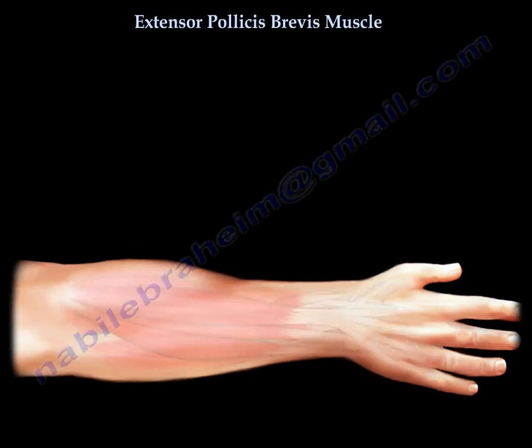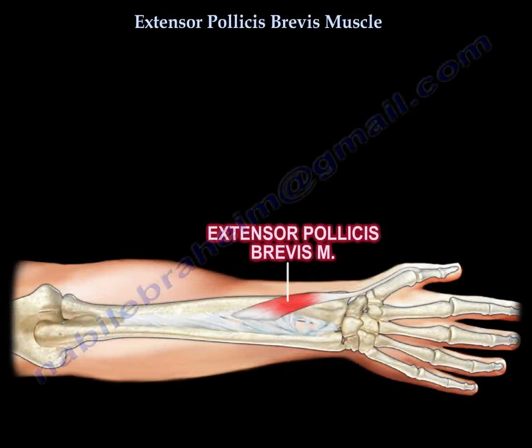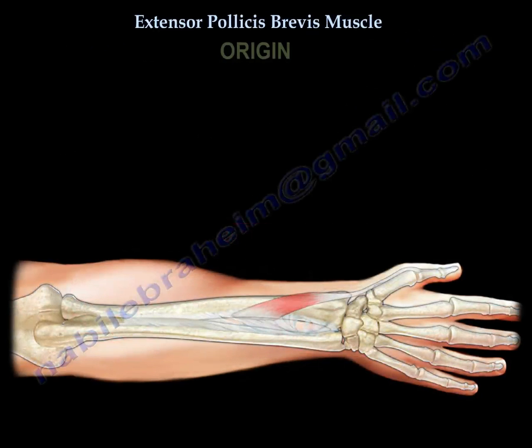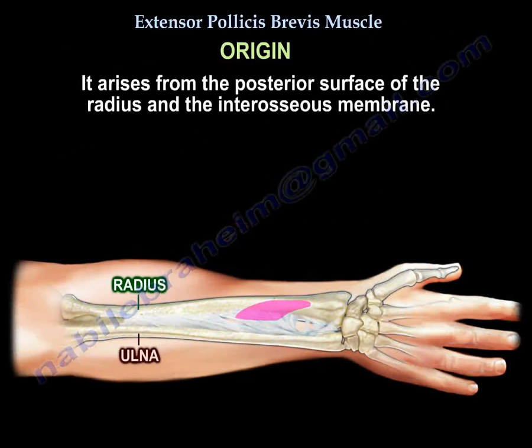Extensor pollicis brevis. The origin: it arises from the posterior surface of the radius and interosseous membrane.